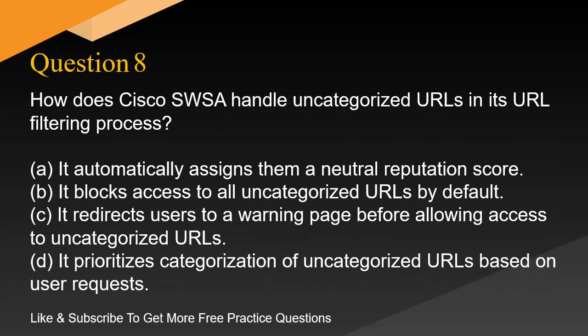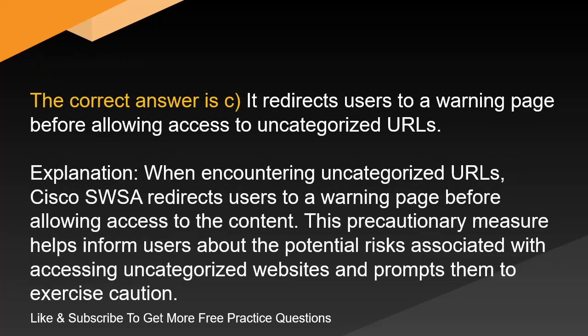Question 8. How does Cisco SWSA handle uncategorized URLs in its URL filtering process? A. It automatically assigns them a neutral reputation score. B. It blocks access to all uncategorized URLs by default. C. It redirects users to a warning page before allowing access to uncategorized URLs. D. It prioritizes categorization of uncategorized URLs based on user requests. The correct answer is C. It redirects users to a warning page before allowing access to uncategorized URLs. Explanation. When encountering uncategorized URLs, Cisco SWSA redirects users to a warning page before allowing access to the content. This precautionary measure helps inform users about the potential risks associated with accessing uncategorized websites and prompts them to exercise caution.